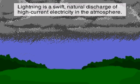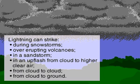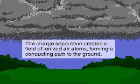Lightning is a high-current electrical discharge in the atmosphere. Thunderclouds are the most common producers. For this discharge to occur, there must be a charge separation large enough within the cloud to cause electrical breakdown of the air.